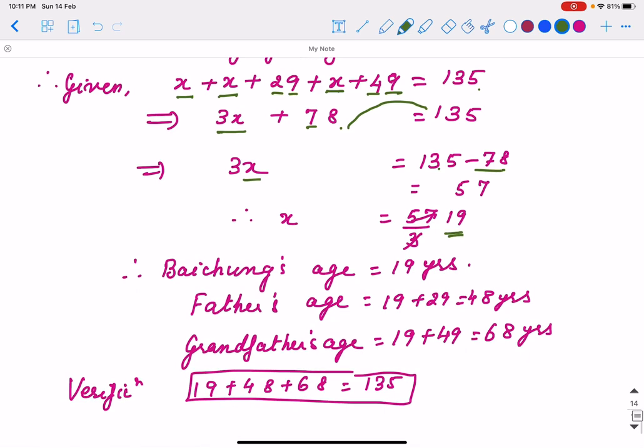That means Baichung's age is 19 years. Father is 19 plus 29, that is 48. And grandfather is 19 plus 49, that is 68.